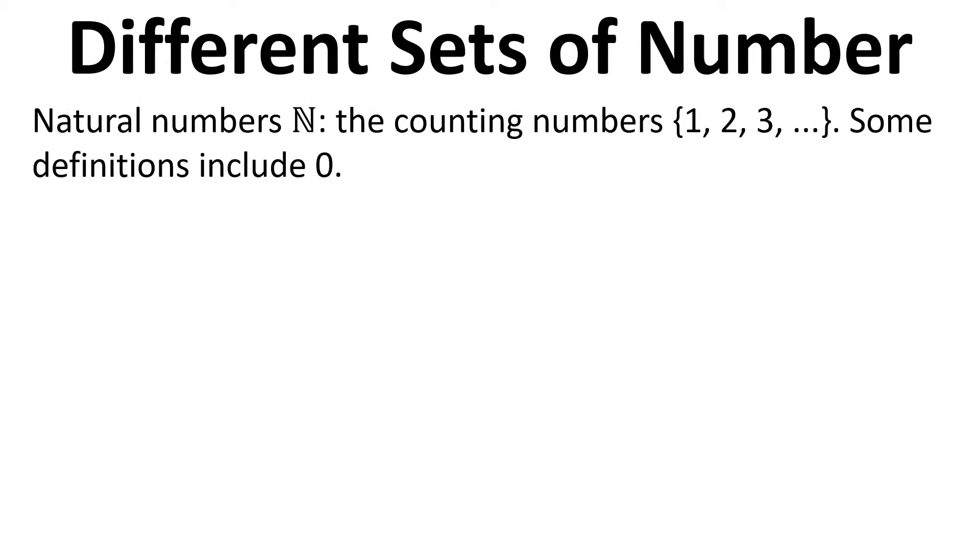First of all, we have the natural numbers, which are represented by this symbol here - a capital N with a double bar in the middle. These are the counting numbers, so they're just whole numbers: 1, 2, 3, and upwards. Some definitions include 0.